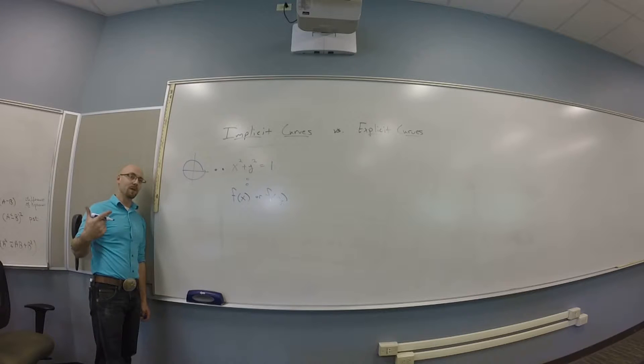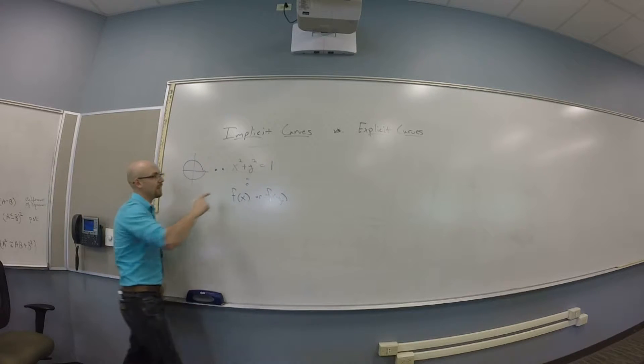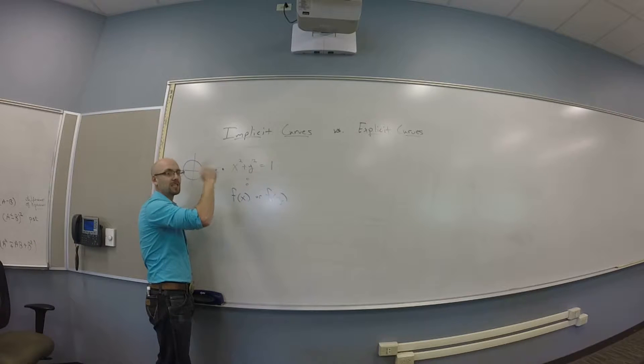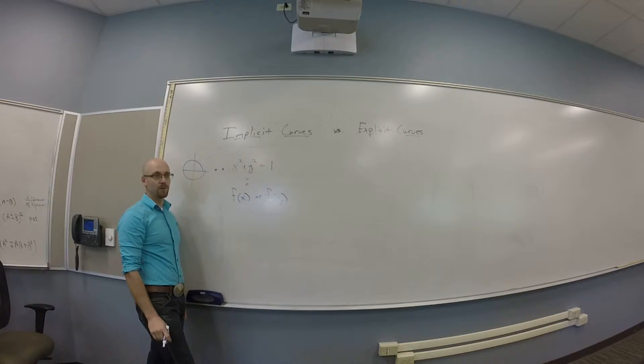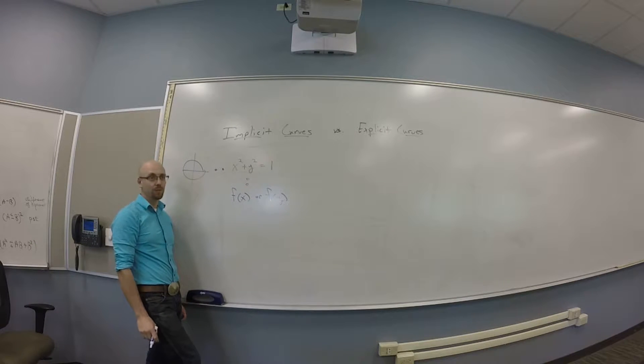We could make a polar function, we could make a vector-valued function. There's some options. But in x's and y's, this is what's called an implicit curve. You can't make it a function of the other two variables.